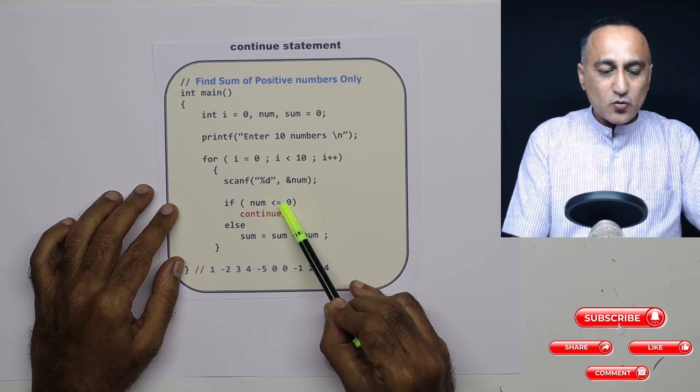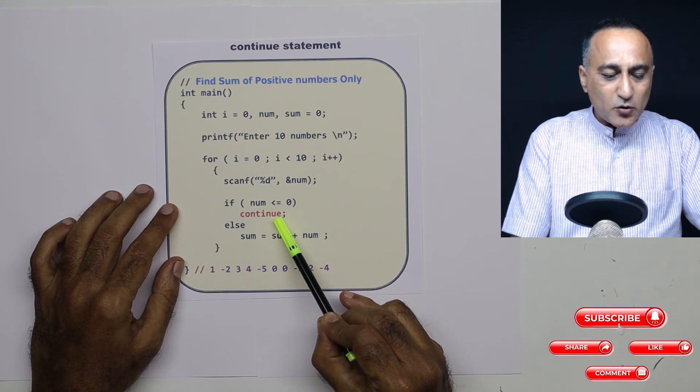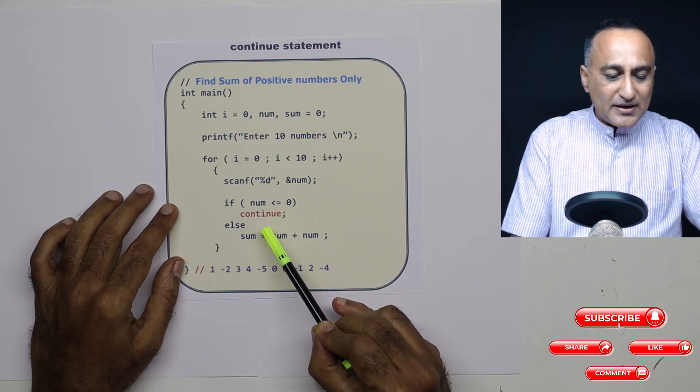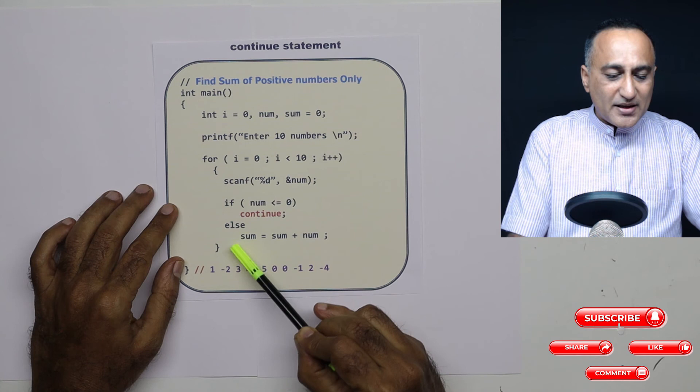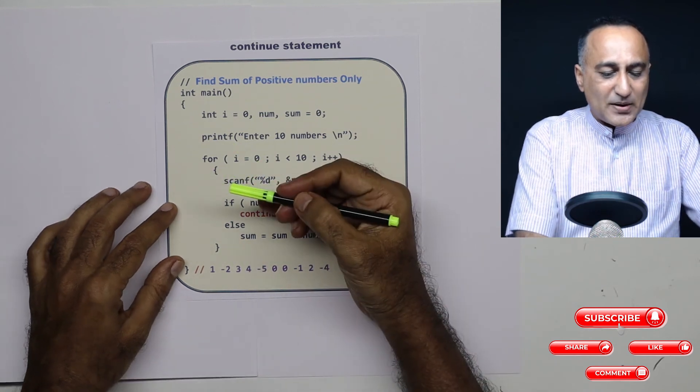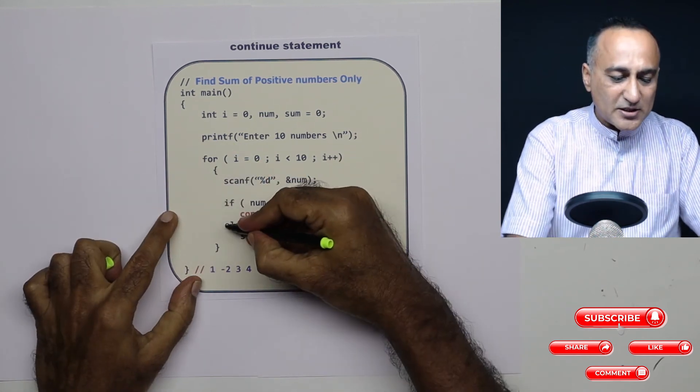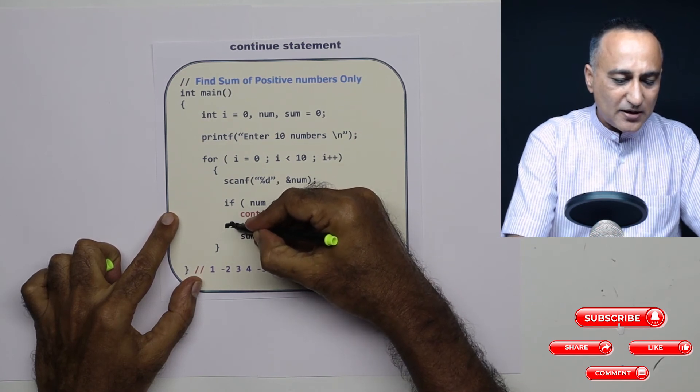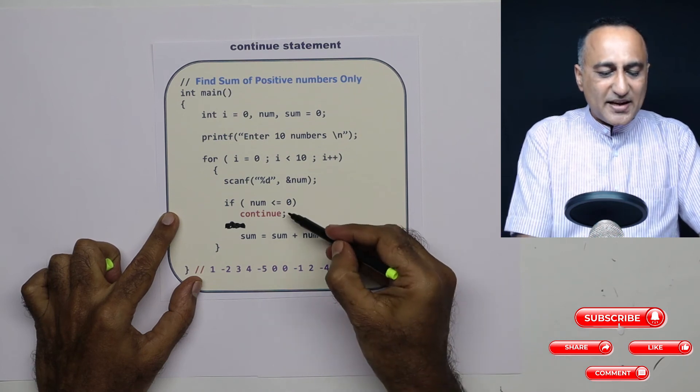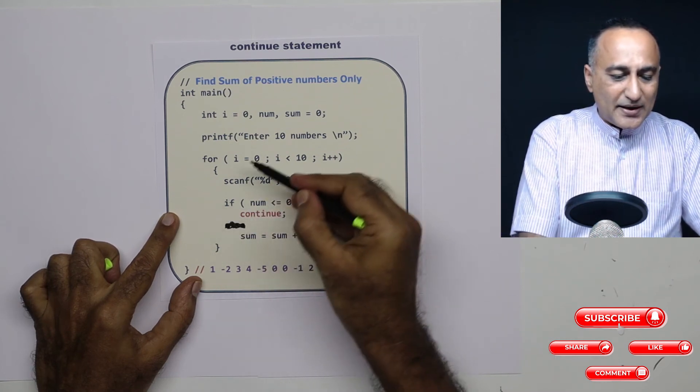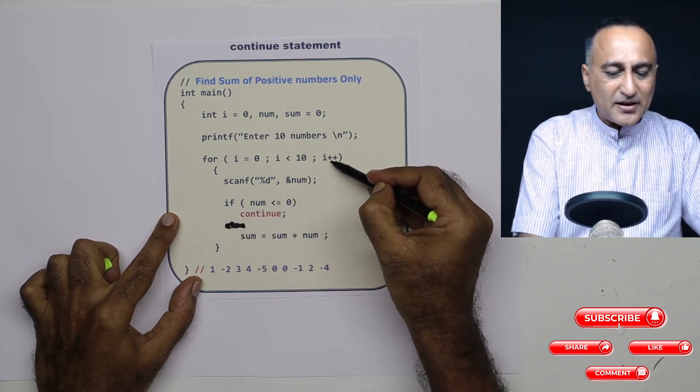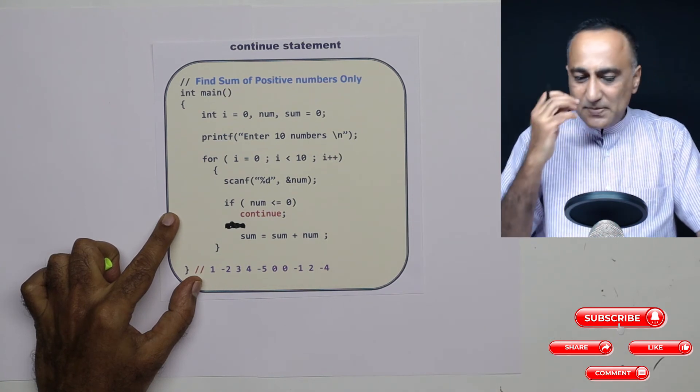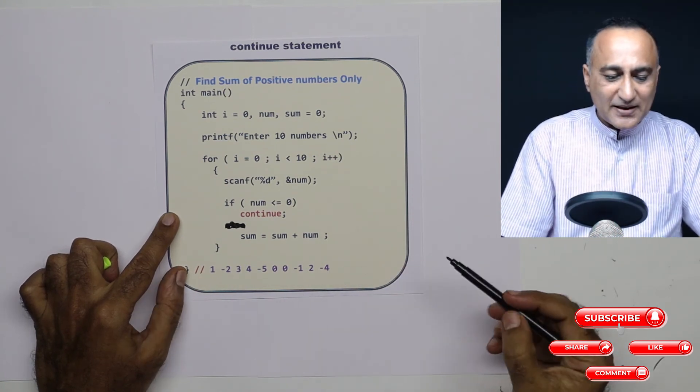If I enter minus two, this condition becomes true. Once it hits this continue, it will not execute the else part. Actually, the else part is not really required here. Let's take this else part off. So once it encounters the continue, it will directly go back to this particular increment. So let me explain to you with a series of data samples.